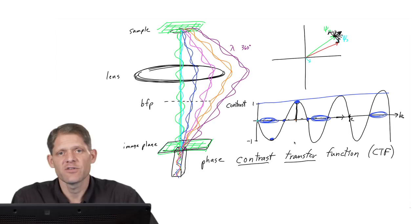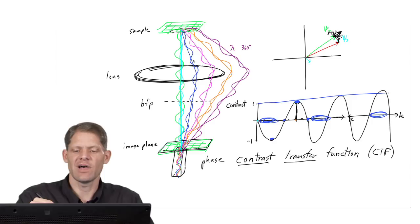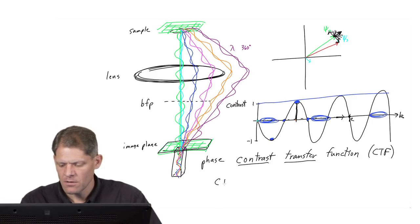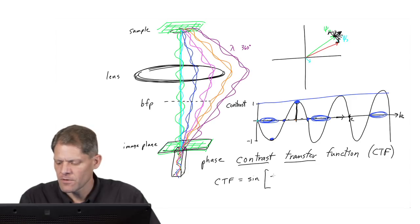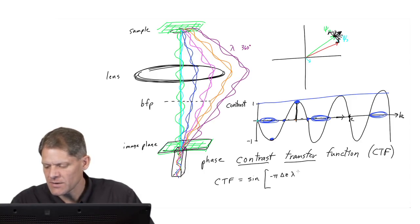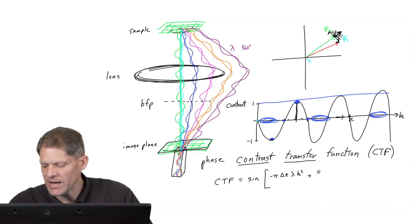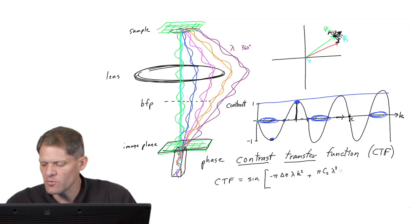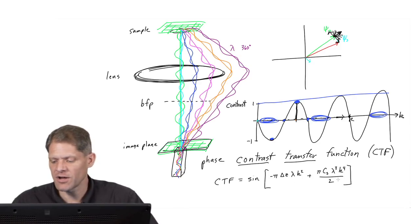The exact form of the contrast transfer function can be derived exactly by considering the additional path length suffered by each scattered beam. Its derived form is that the CTF equals the sine of: pi times defocus times the wavelength of the incident electron times spatial frequency squared, plus pi times the coefficient of spherical aberration of the objective lens times wavelength cubed times spatial frequency to the fourth power, divided by two.